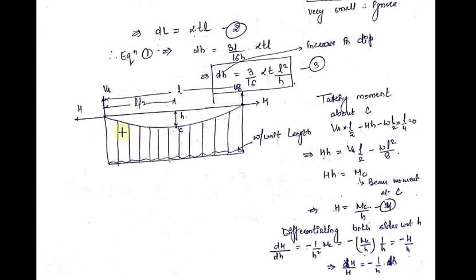At supports A and B there will be two reactions: one will be a vertical reaction VA and VB, and the other will be a horizontal thrust acting in the outward direction. Now, if I take the moment about point C equal to zero — we know that the moment at any point in a cable is zero — therefore I can take the moment at any point equal to zero.